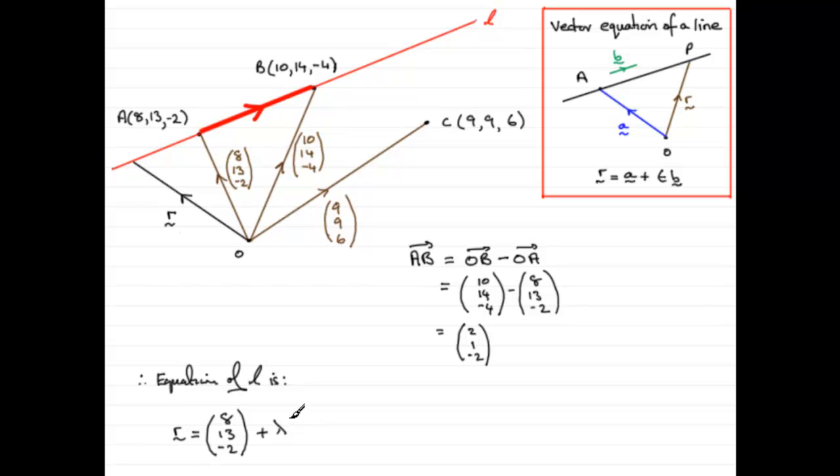And then we need the vector B, which is a vector parallel to the line. And we've chosen AB here. So AB is going to be 2, 1, minus 2. 2, 1, minus 2.